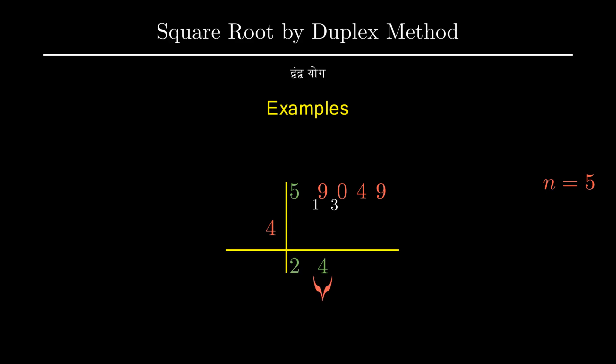Next step is again to find the duplex of the previous digit of our final answer which is 4 which gives us 16. Then we subtract this from the new starting number 30 to get 14.